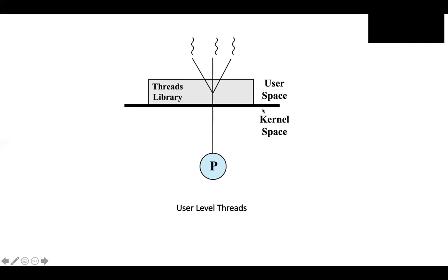Here is a diagram which illustrates the idea of user-level threads. In this case, we have three threads introduced at the user-space level. There is essentially a wall between user-level and kernel-level, and the kernel-level cannot have access to anything that's in the user-level.